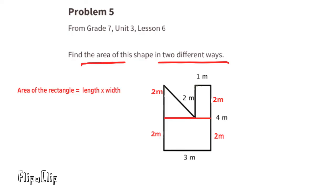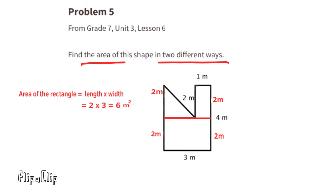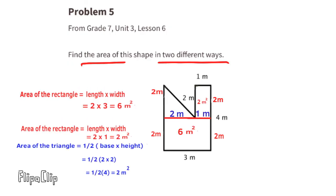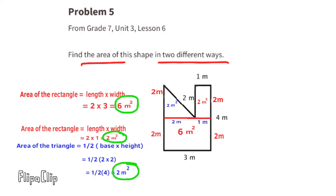Now using a different strategy, I've divided the larger shape into three parts: a larger rectangle on the bottom, a triangle on the top left, and a smaller rectangle on the top right. The larger rectangle is 3 by 2 meters = 6 meters squared. The smaller rectangle is 2 by 1 meter = 2 meters squared. The triangle is half of 2 times 2 = 2 meters squared. Adding them: 6 + 2 + 2 = 10 meters squared.